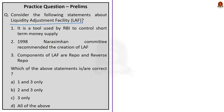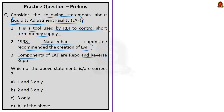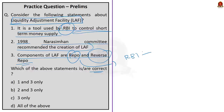Question two: Consider the following statements about LAF — Liquidity Adjustment Facility. Statement one — it is a tool used by RBI to control short-term money supply. Statement two — the 1998 Narasimhan Committee recommended the creation of LAF. Statement three — components of LAF are repo and reverse repo. All three statements are correct. LAF is used by RBI to control short-term money supply. Its two components are repo — the rate RBI charges clients for short-term loans — and reverse repo — the interest rate RBI pays clients. The 1998 Narasimhan Committee recommended LAF's creation. Answer: option D.